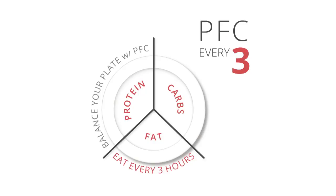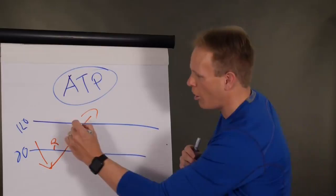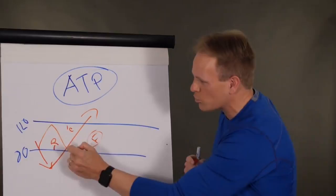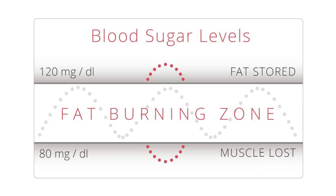See, protein affects the hormone glucagon, which raises your blood sugar. Carbs affects the hormone insulin, which lowers your blood sugar. And fat slows down the rate of digestion. The combination of the three keep your body in this range. And when you're in that range, you release your stored fat. You actually create internal balance in your body.